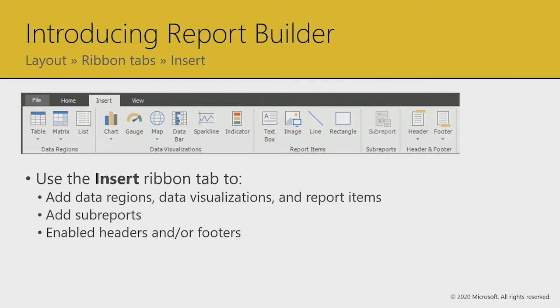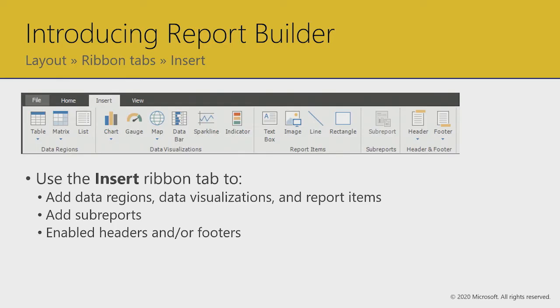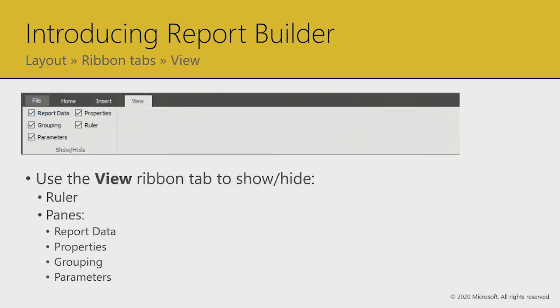There's the ability to add sub-reports, but it's currently ghosted on the ribbon because the sub-reports capability hasn't been added to the service yet. However, by the time you view this video or shortly thereafter, it may be available as it's being actively worked on. In your report layout, you can also turn headers and footers on or off. On the View ribbon tab, you can turn the ruler on or off, and toggle the various panes according to the screen real estate you need.